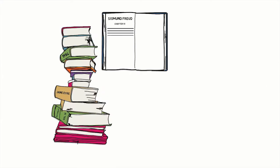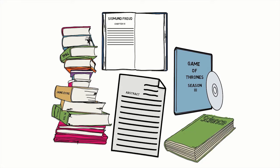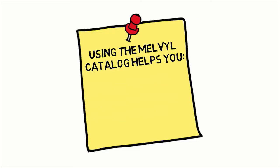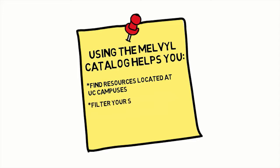If you are looking for books, media, and other resources, you have two places to search. You can search in the UCLA Library Catalog for materials at UCLA, or you can search in the Melvyl Catalog to find materials at all UC campuses and libraries around the world. In this tutorial, you will learn how to search for resources at UC campuses and libraries worldwide, filter your search results, and identify key information available in the catalog record.